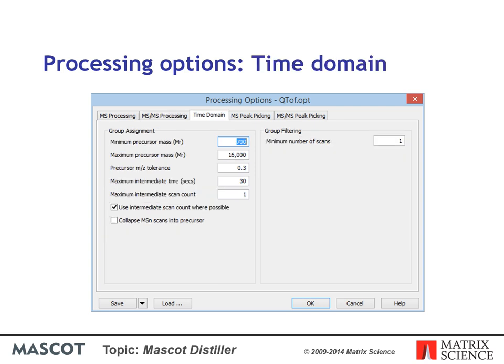For LCMSMS data, the usual setting for multi-scan data will be to use time domain processing. The parameters on the time domain tab control how MSMS scans will be summed and filtered — these settings are all fairly conventional. Spectra from very small peptides have no value in database searching because such short sequences can be expected to occur by chance in a large database; a setting of 700 Daltons for minimum precursor mass will generally be appropriate. The upper limit on precursor mass in Mascot is 16,000 Daltons, so there is little point adding larger peptides to the peak list.